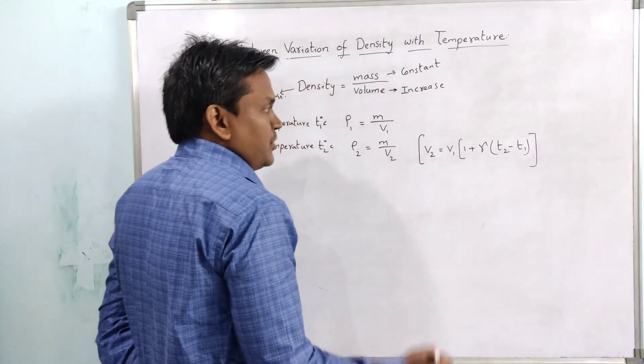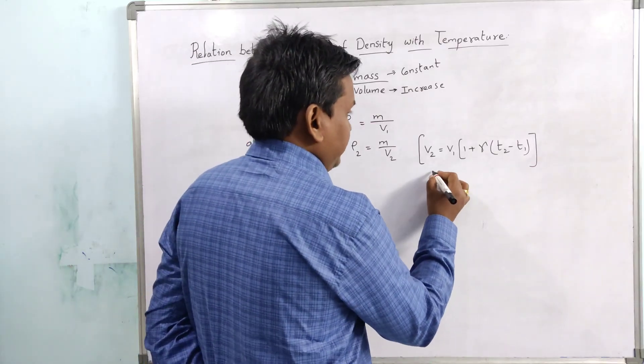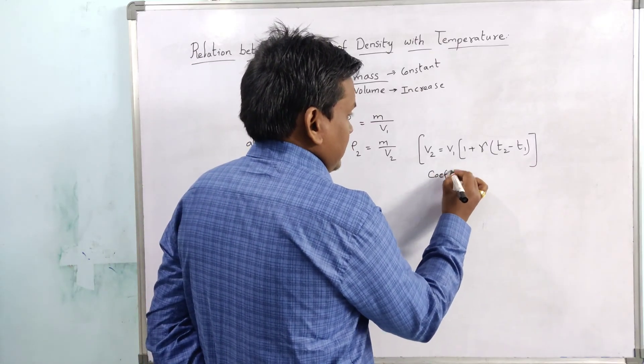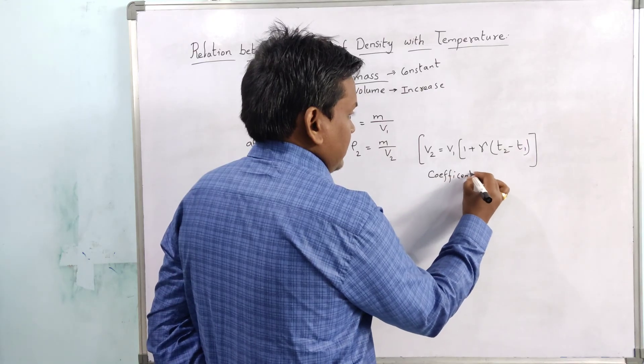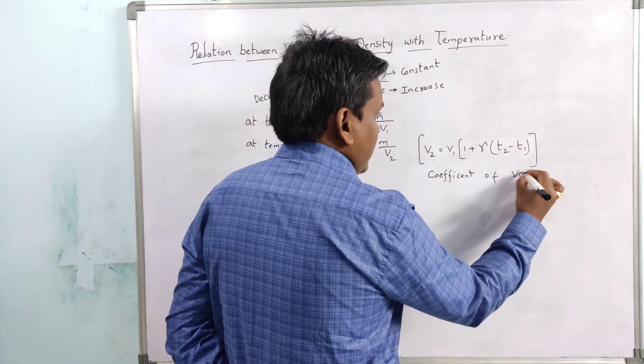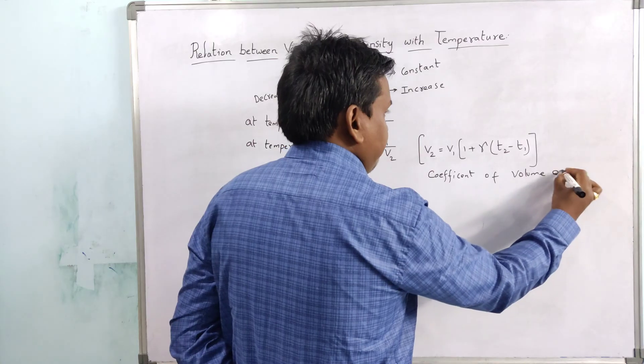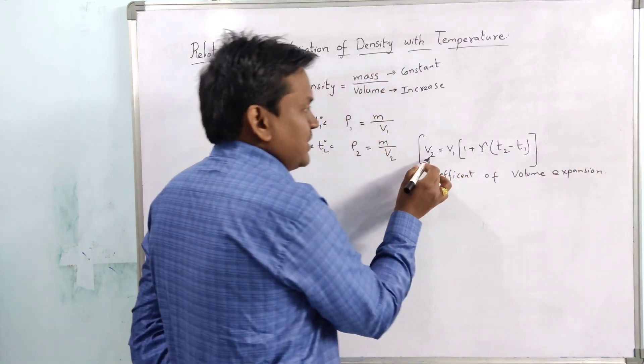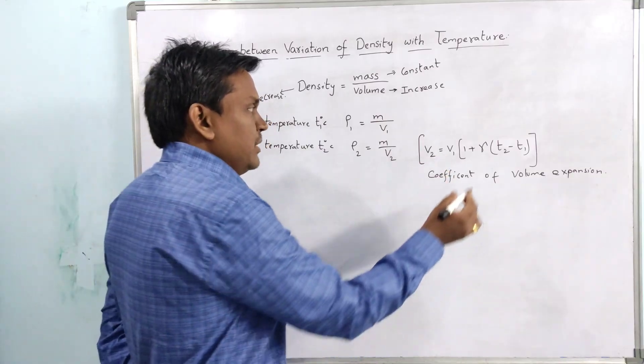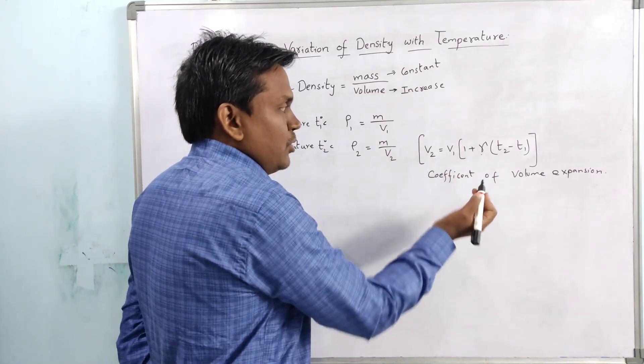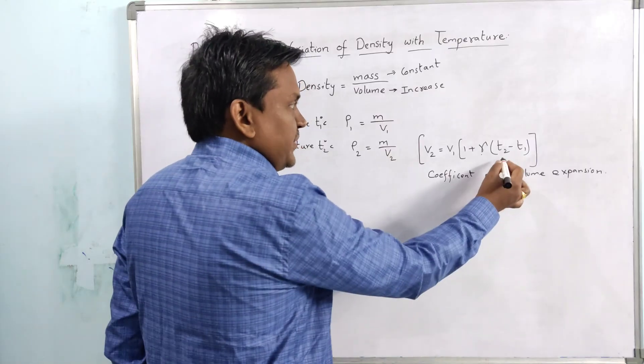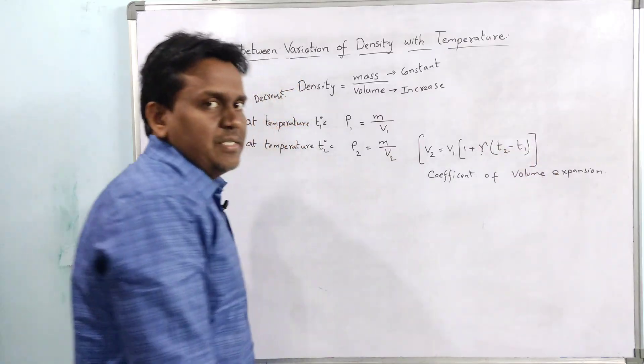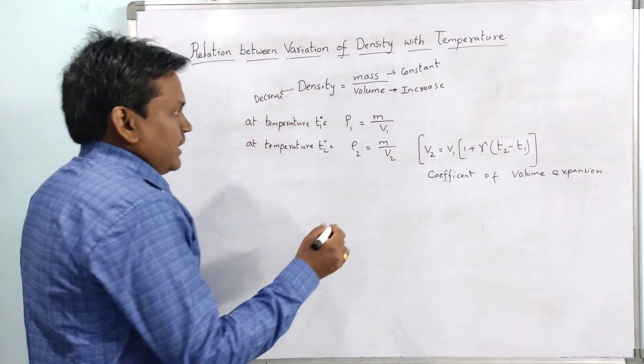v2 is the change in volume and v1 is the original volume. Here gamma is called the coefficient of volume expansion and T2 minus T1 is the change in temperature.